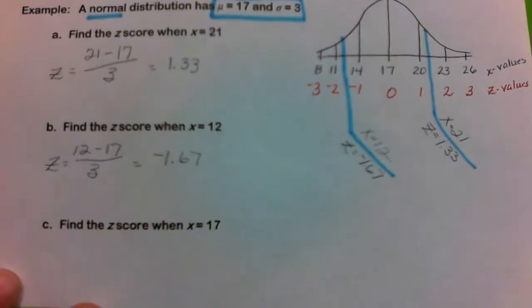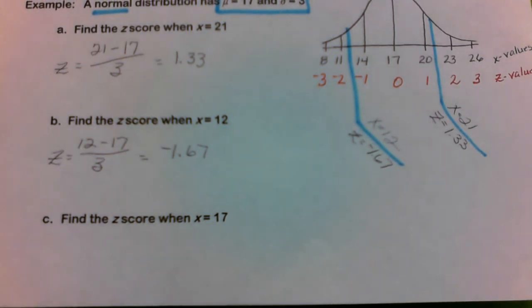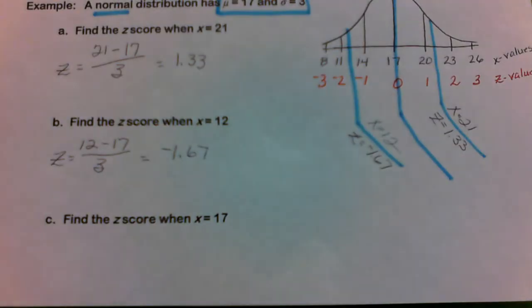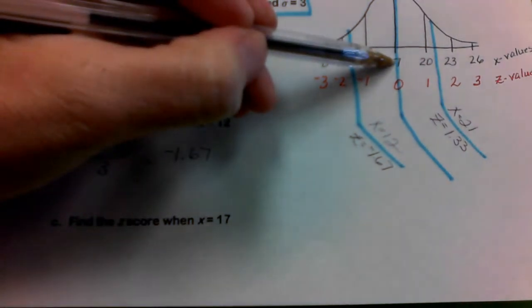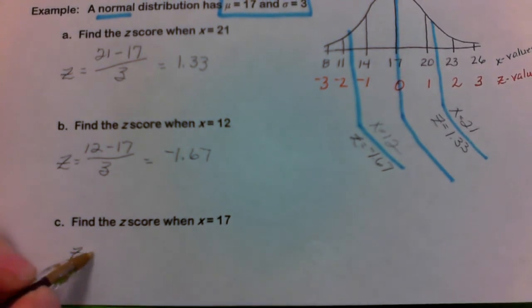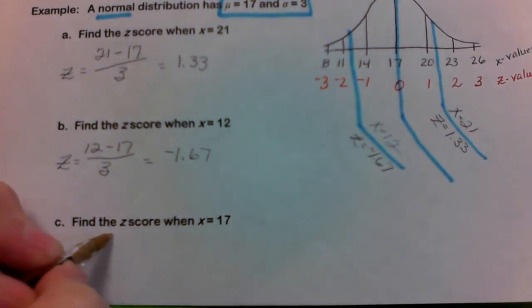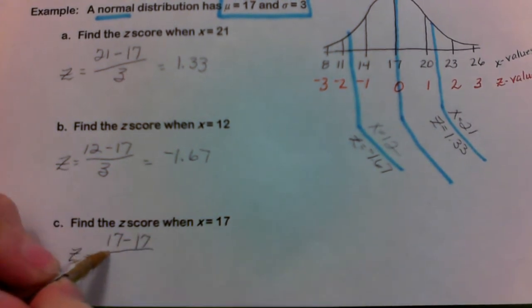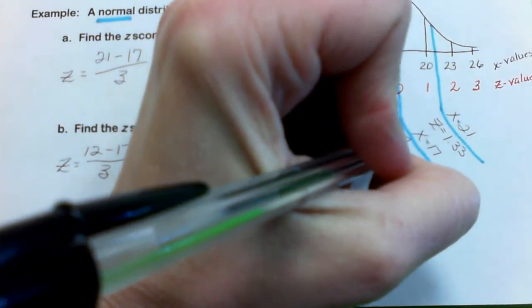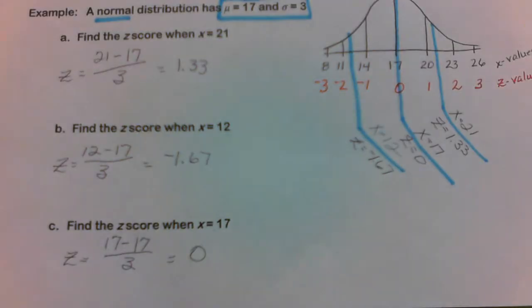The last part: when X = 17. Looking at the picture, 17 is right at the center, so the standardized value should be 0. Using the formula: Z = (17 − 17) ÷ 3 = 0 ÷ 3 = 0. When X equals 17, Z equals 0. We will be working a lot with both raw scores (X values) and standardized scores (Z values).